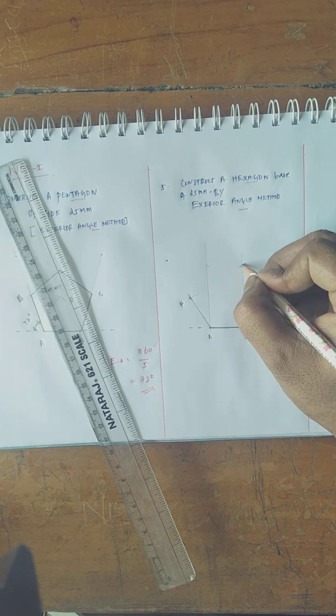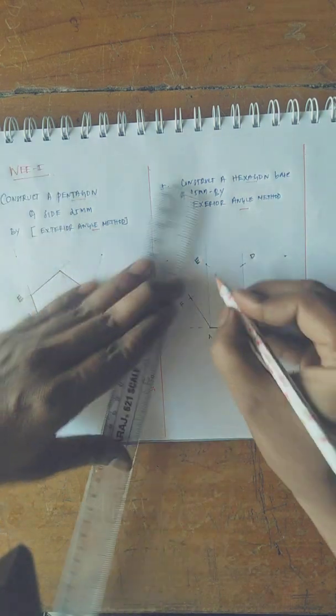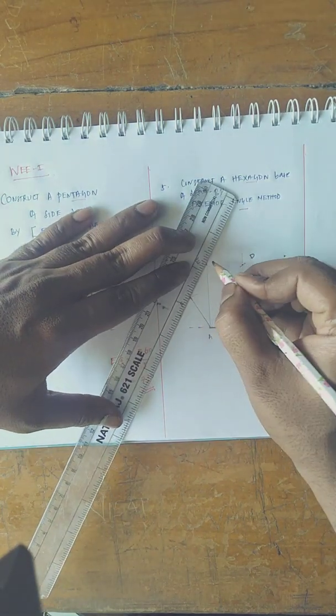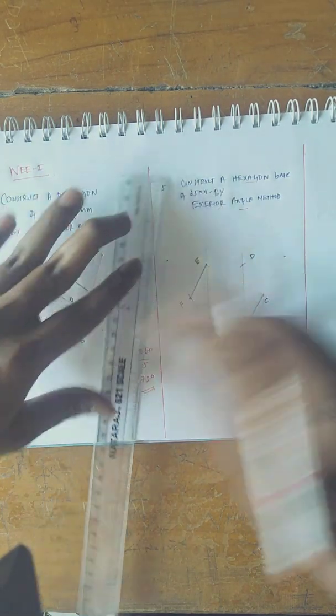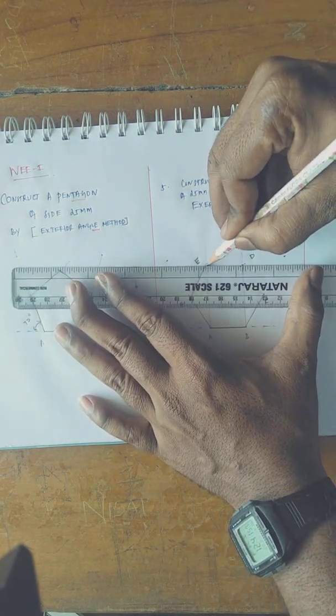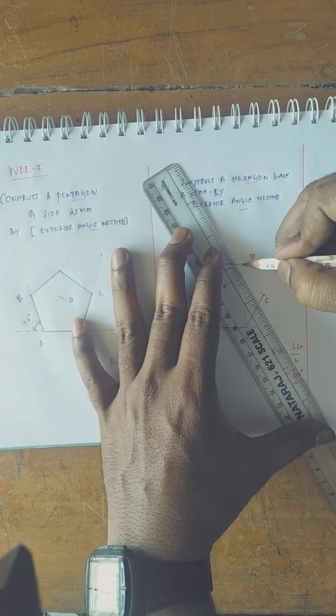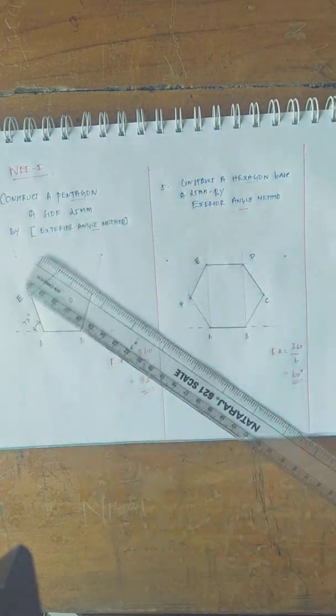This is D, this is E. If you are connecting it, you may get the regular hexagon. That is quite simple.